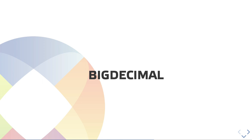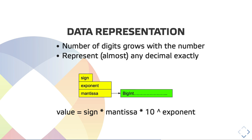The other road we are following in designing this new proposal is BigDecimal. BigDecimal is quite close to the data representation of 128 bits, but we don't have the limitation of size. The number of digits here can grow with the number, as long as you have memory space. We can represent almost any decimal value exactly. Some numbers with infinite precision we cannot represent, but besides that there is not much we cannot represent. The representation follows what we had before: sign, exponent, and mantissa — but the mantissa is a BigInt, so you can represent as many digits as memory allows.